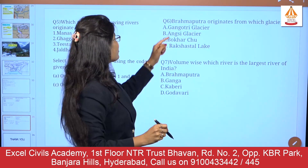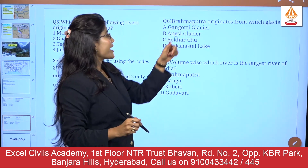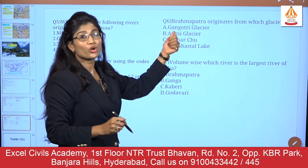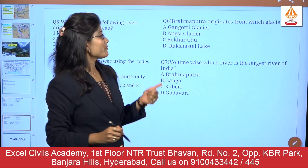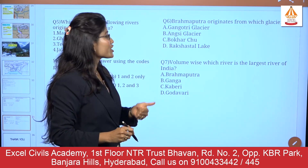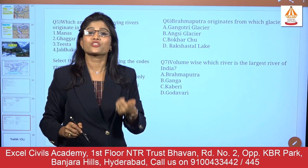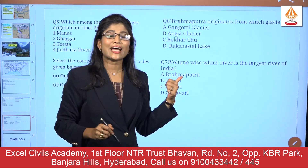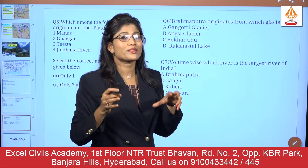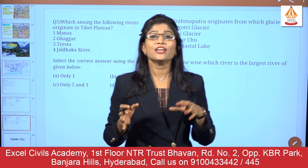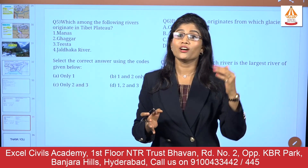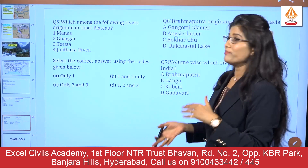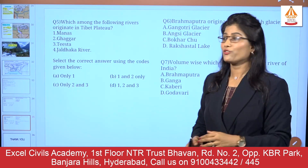The last question: the Brahmaputra originates from which glacier? Options are Gangotri glacier, Angsi glacier, Bokarchu glacier, and Rakshastal glacier. To get the answer, you will not find it in this slide directly — you have to refer to the previous slide about the origin of river Brahmaputra.